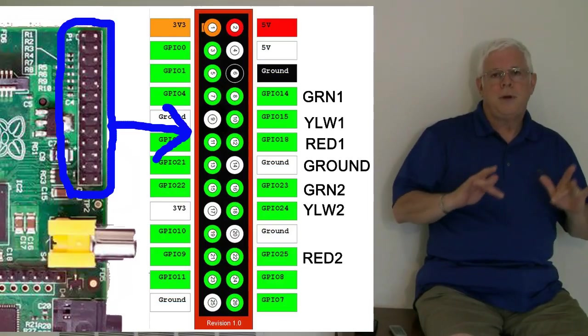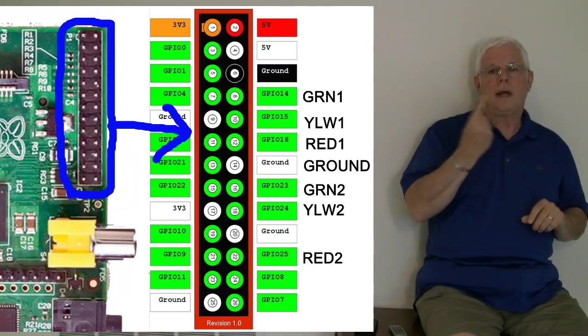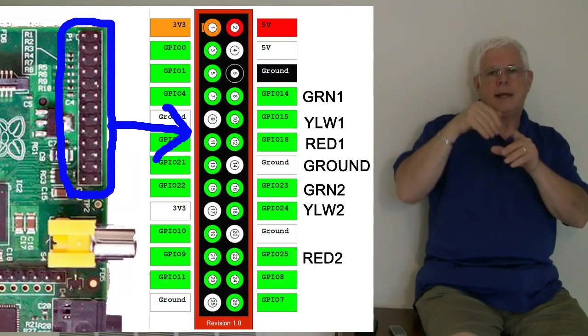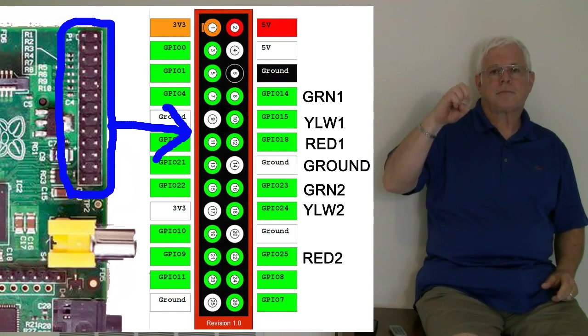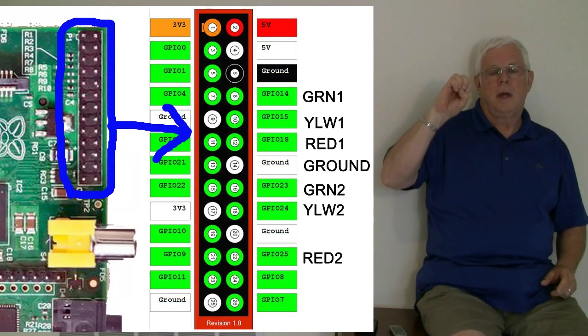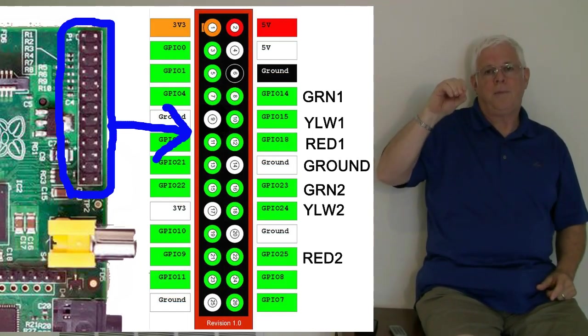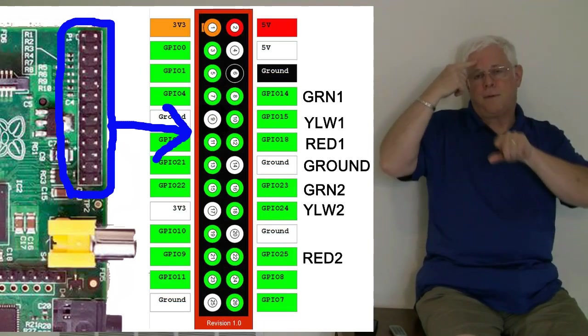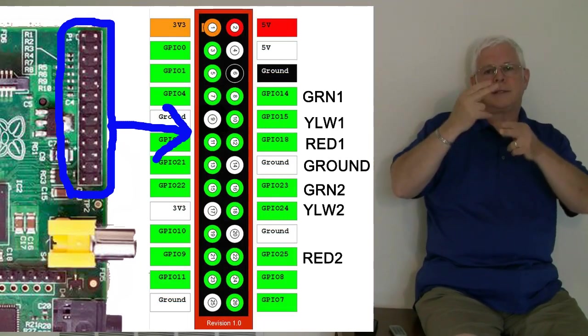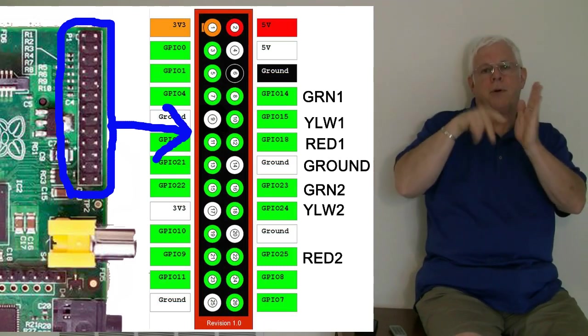The computer has a 26-pin connector. We're only going to be using seven of the pins in the right column. These are general purpose pins for input and output, also GPIO. The top green box is for green number one, and that is named GPIO 14 inside our program.